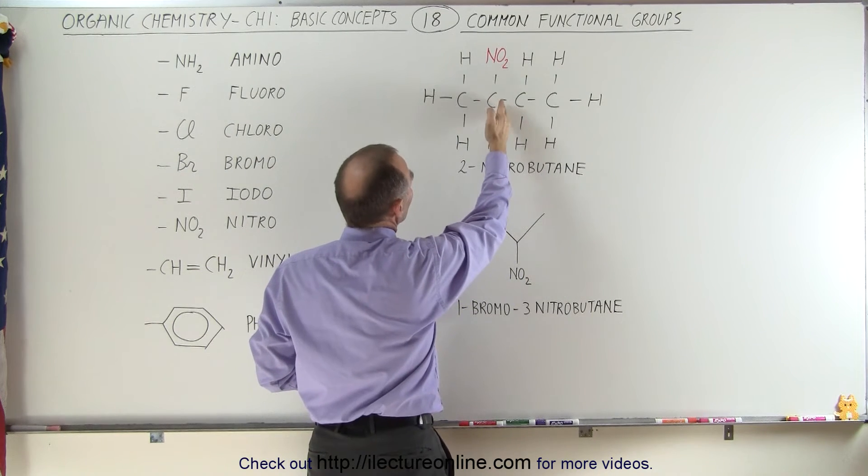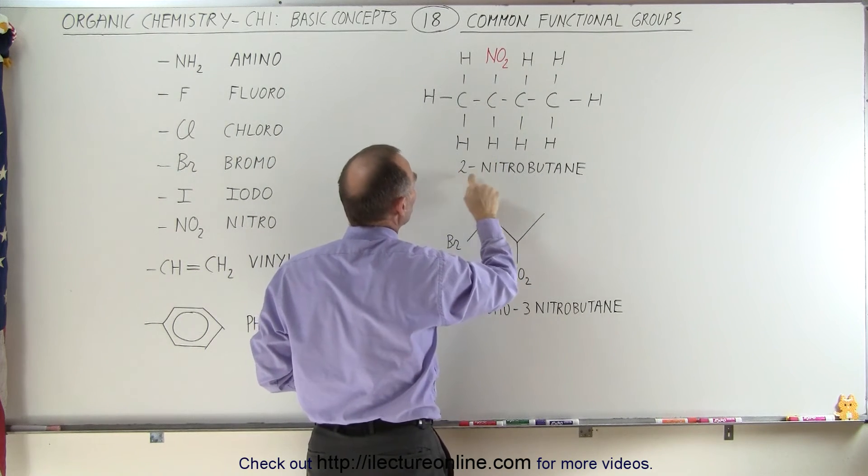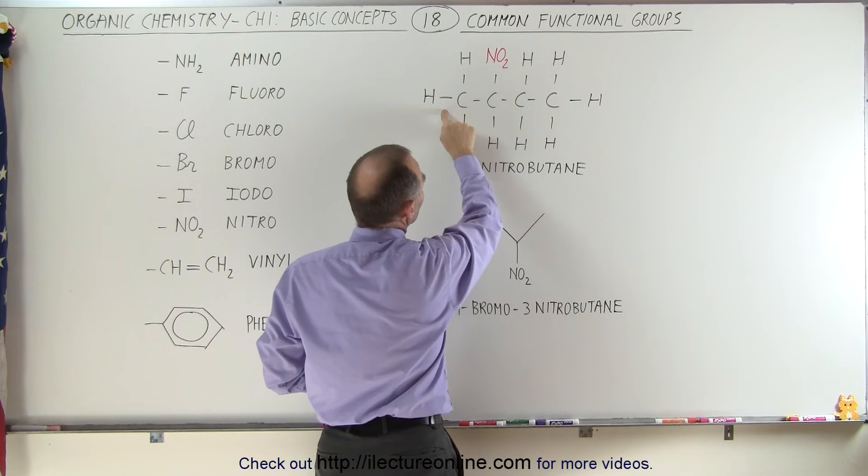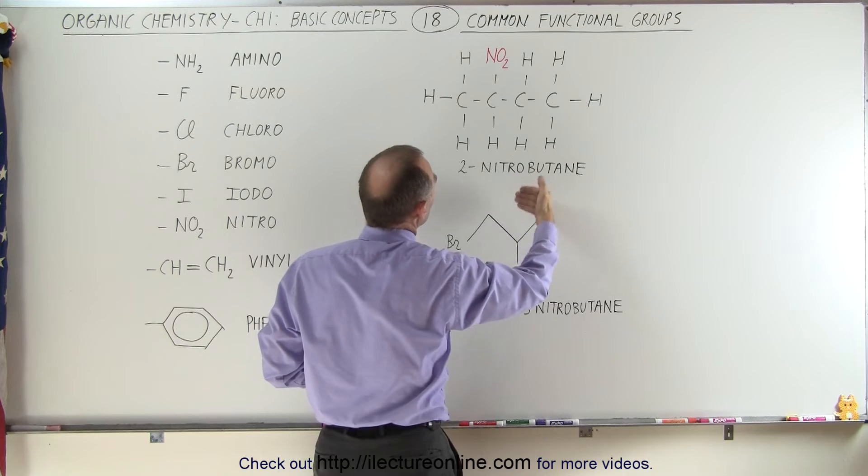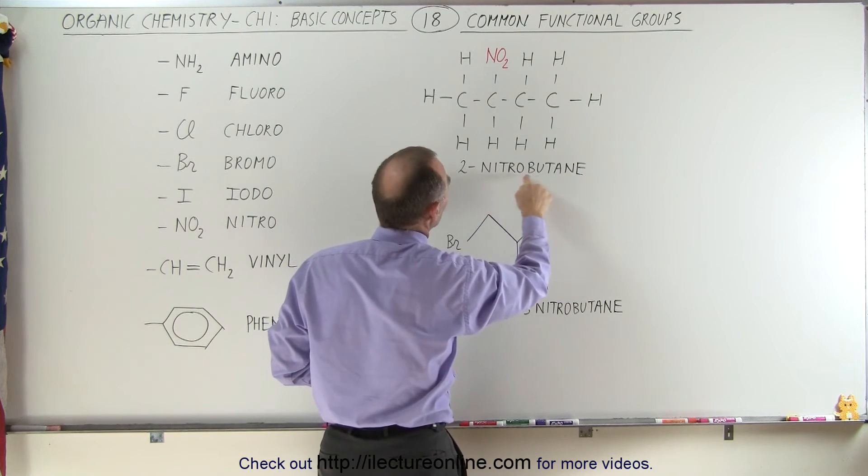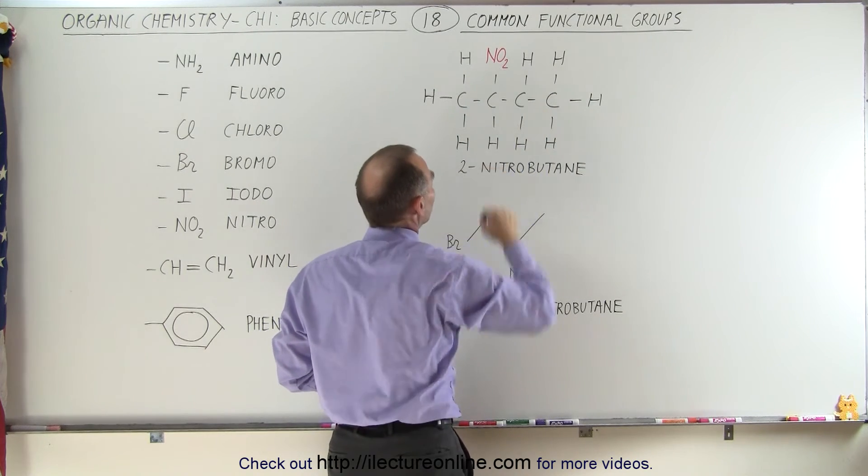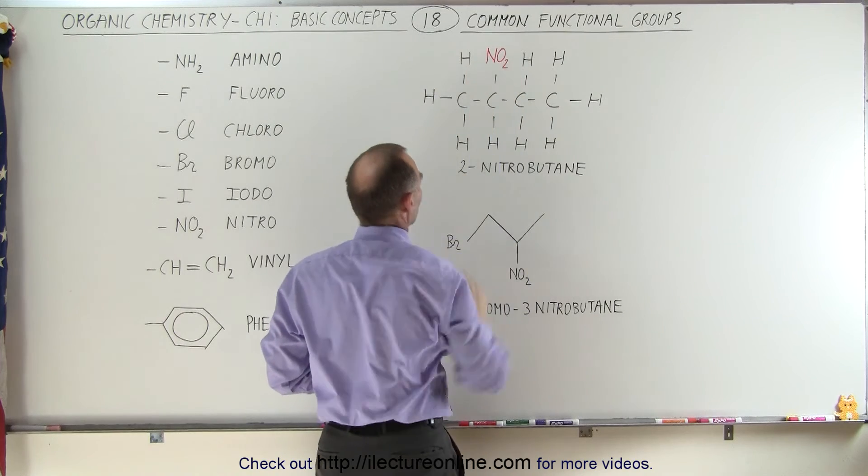and since it's connected to the second carbon, we call it 2-nitro, and since it's connected to a carbon chain of four carbons, we call it butane. So 2-nitrobutane is the name of this particular molecule with this functional group.